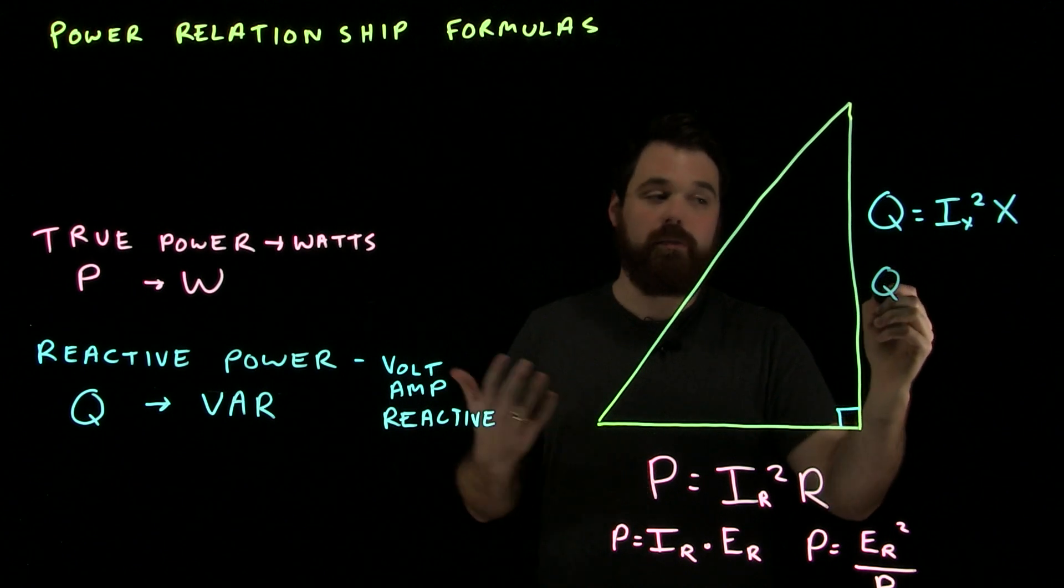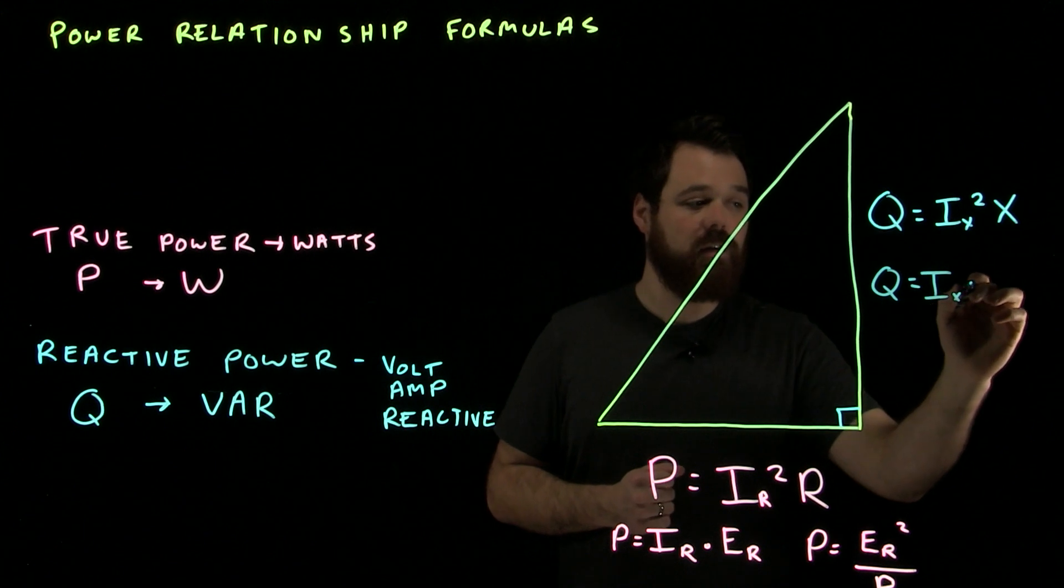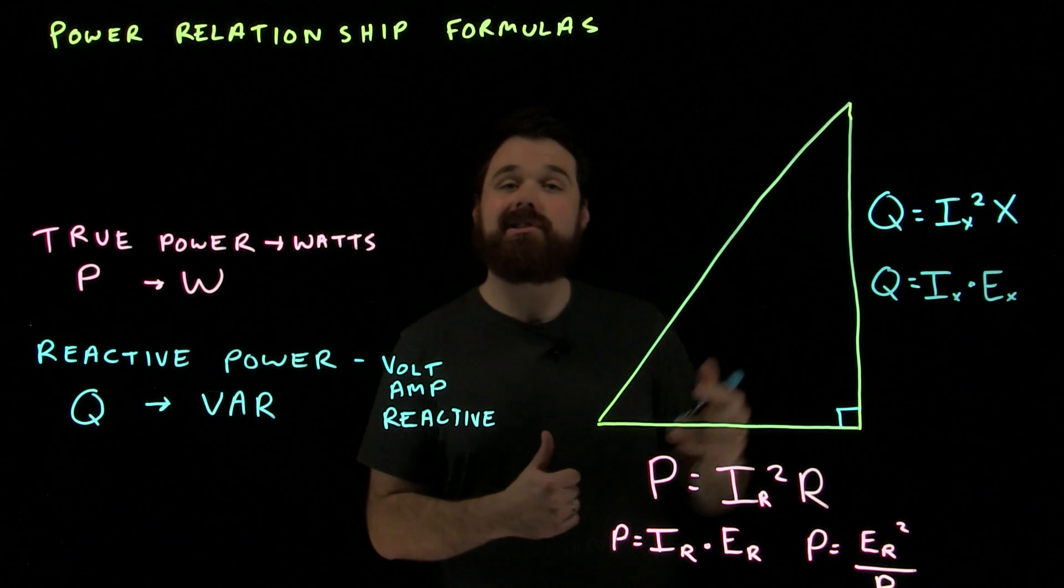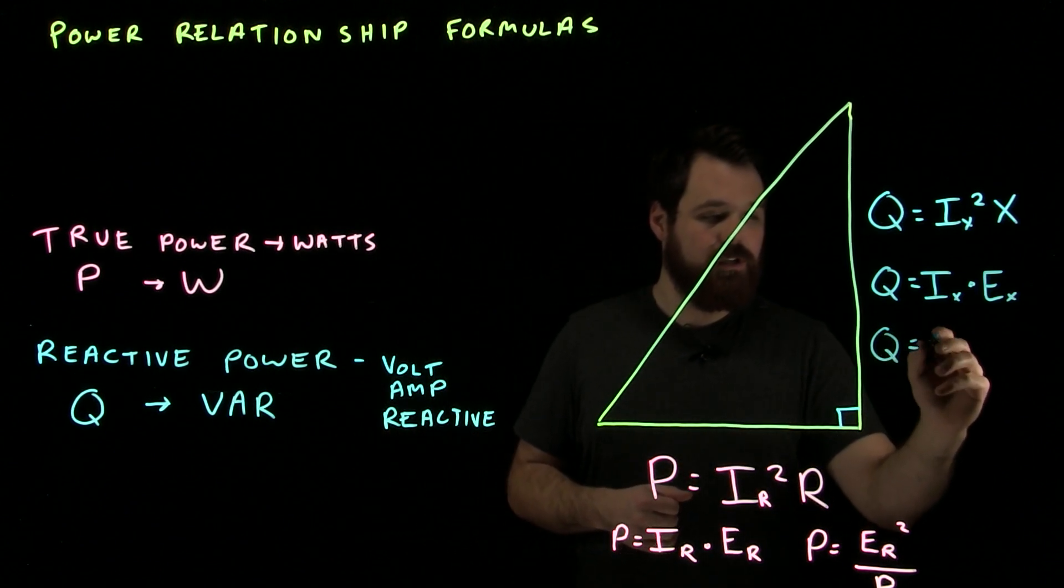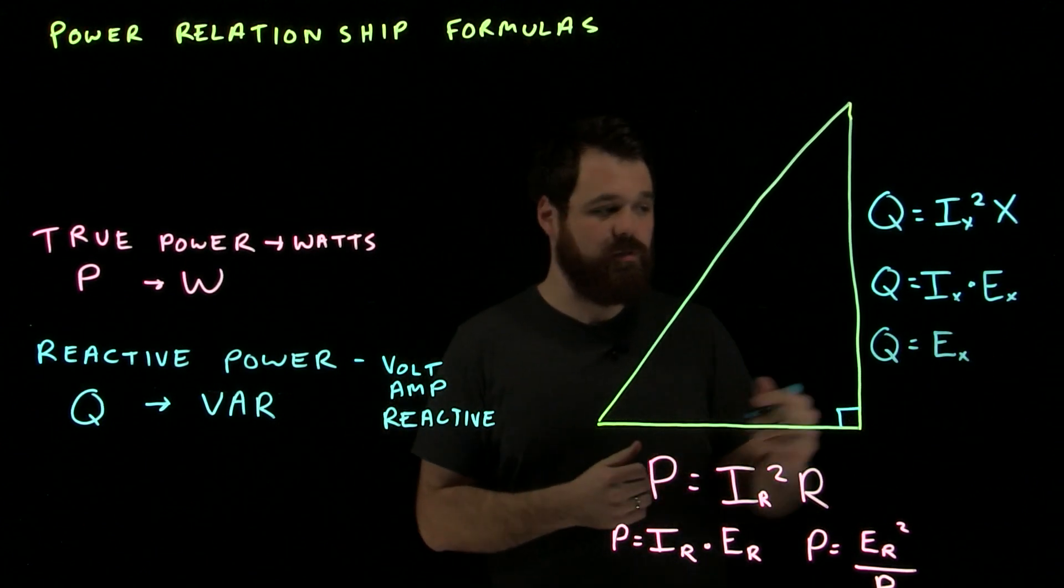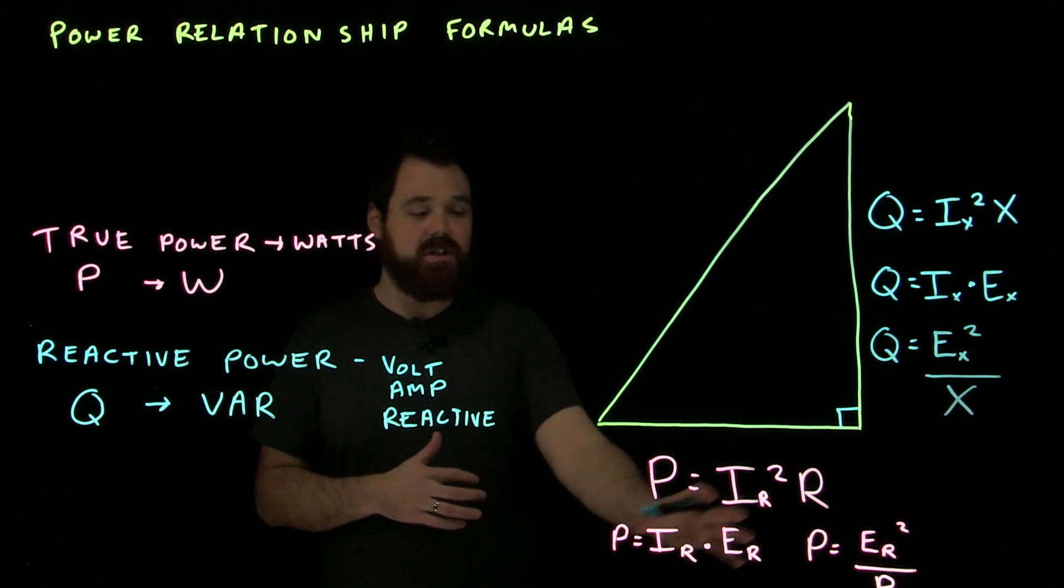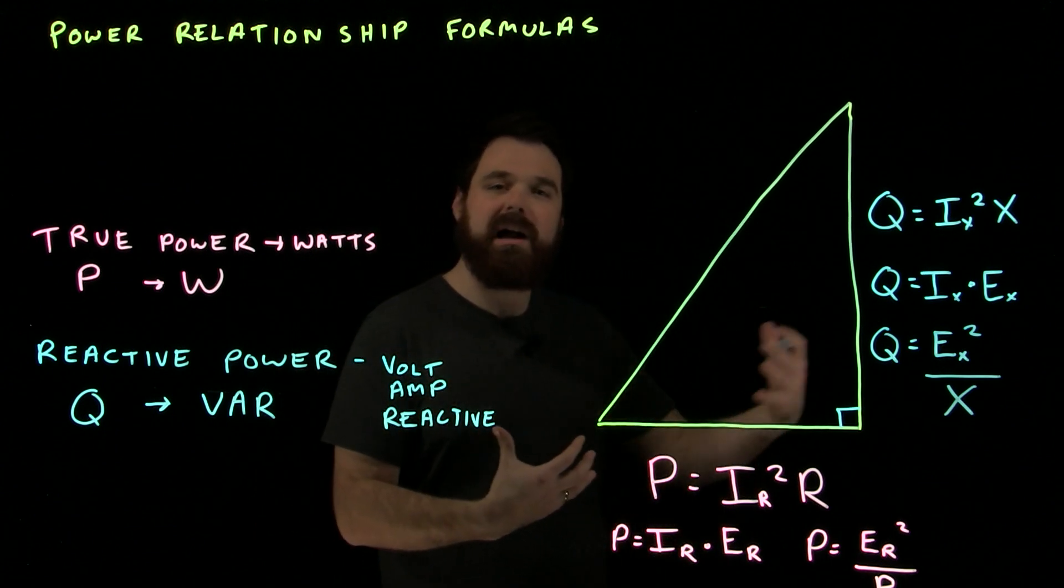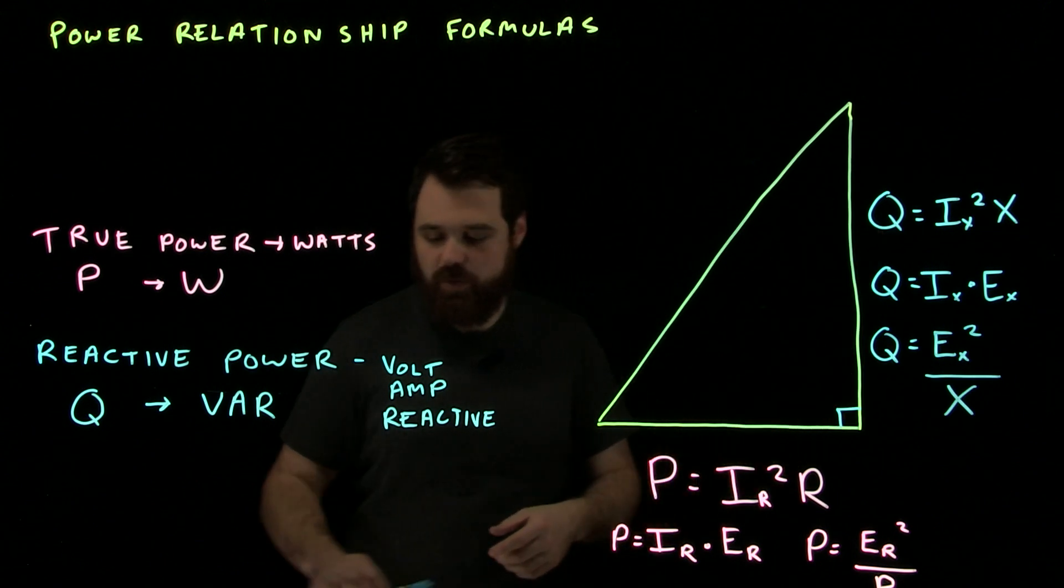We're also going to see Q, reactive power, equals the reactive current times the reactive voltage. Same formula as here, just coming from a different place. And we're also going to see Q equals the voltage of the reactants, the voltage drop across the reactive component, squared, divided by the reactants. So, you'll notice these formulas are very, very similar. And that's because they're both talking about power. It's just what kind of power and caused by what. And then this triangle is a good way for us to organize that relationship between them.